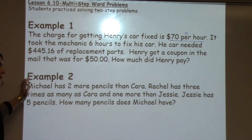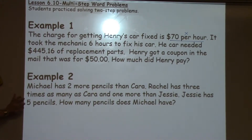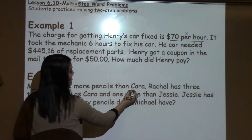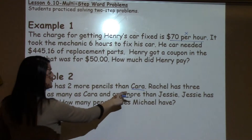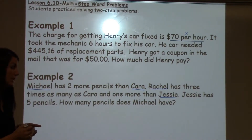For example two, example two says: Michael has two more pencils than Kara. Rachel has three times as many as Kara and one more than Jesse. And Jesse has five pencils. How many pencils does Michael have? I've got lots of different steps, but the first thing I want to notice is how many people I'm working with. I have Michael, Kara, Rachel, and Jesse — so this is a perfect problem to make a table and organize your work.